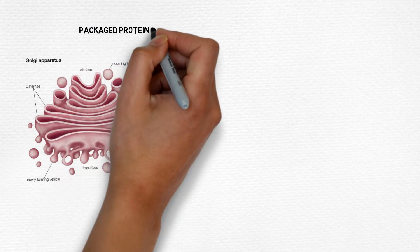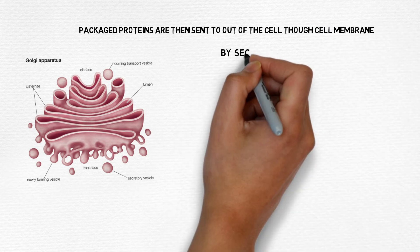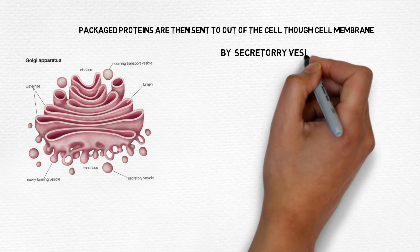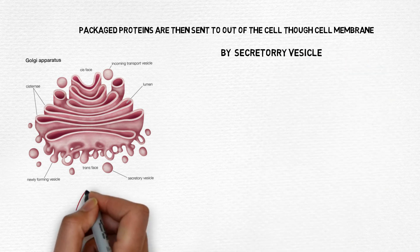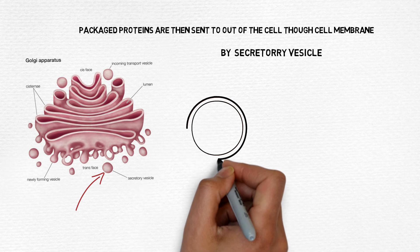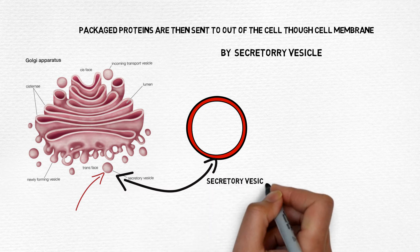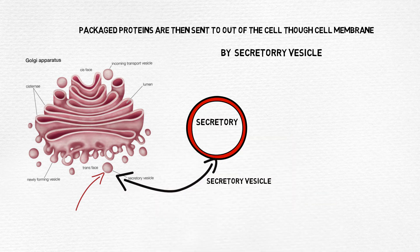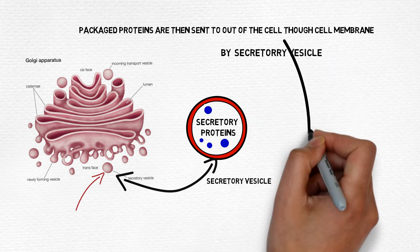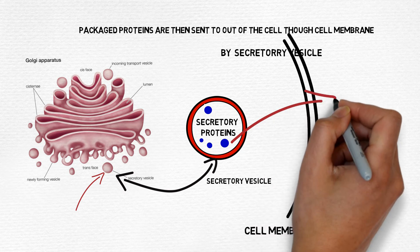The packaged protein and lipid are sent out of the cell through the cell membrane by secretory vesicles. Here in this diagram you can see the secretory vesicles, which are an important part of delivering cell substances. Inside the secretory vesicles you can see secretory proteins like enzymes and hormones. These are sent out of the cell through the cell membrane, which is a semi-permeable membrane.